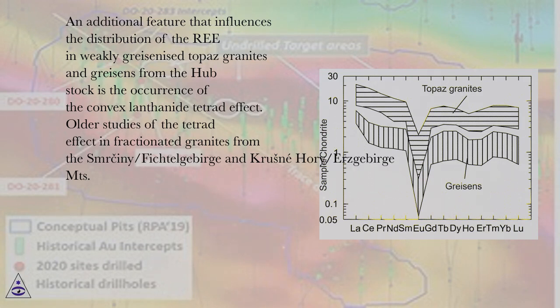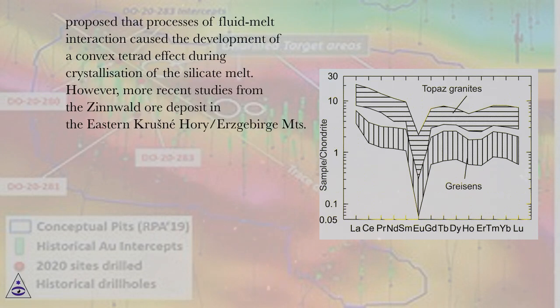Older studies of the tetrad effect in fractionated granites from the Smircini/Fichtelgebirge and Krusne hory-Erzgebirge Mts propose that processes of fluid-melt interaction cause the development of a convex tetrad effect during crystallization of the silicate melt.